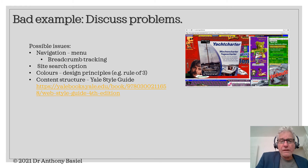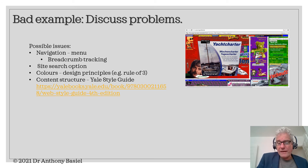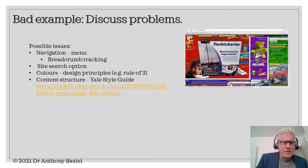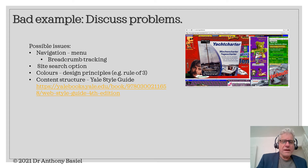Here are some possible issues that you may have found. How do these match up to your discussion? I found navigation, the menu — you might want to have something like breadcrumb tracking, a site search option. Certainly the colors are something that we need to address in this website design in terms of usability. And there's something we might explore more about the rule of three. But also, how about the content structure? There's a brilliant resource called the Yale Style Guide that I'd suggest we take a look at, and the link is there for you to explore after this lesson.